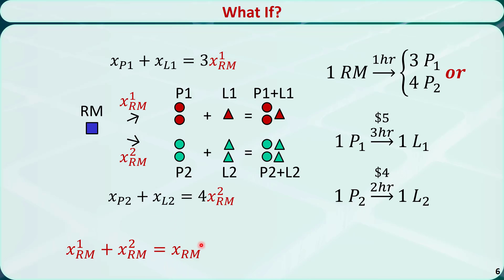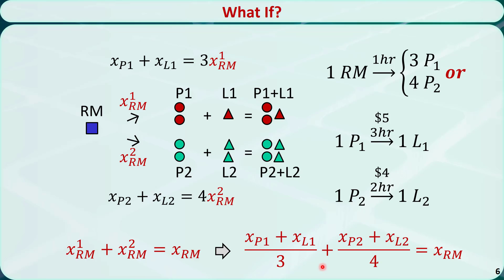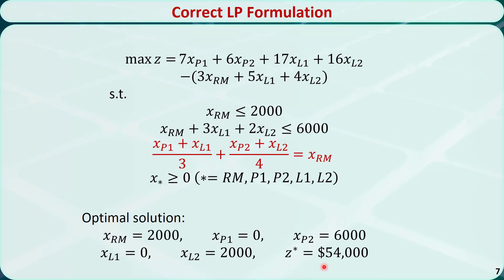Combining these three equations, we get a new constraint. This is the new problem formulation, where this constraint replaces the previous two balance constraints. The optimal solution is to purchase 2,000 units of raw material, sell 6,000 units of product 2 and 2,000 units of luxury product 2, and the maximum profit is $54,000 per week.